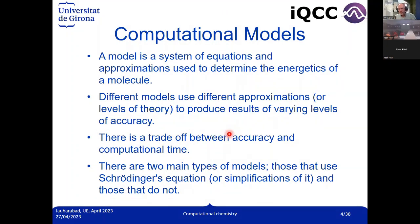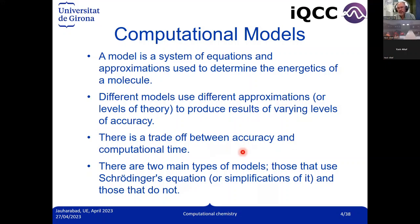When we use computational chemistry, we apply a model — for instance, the Hartree-Fock method — which is a system of equations and approximations used to determine the energy of a molecule. You can use different models depending on your problem, and these models produce results of different accuracy. The most accurate models have the highest computational cost and can only be applied to small systems. There is a trade-off between accuracy and computational time.